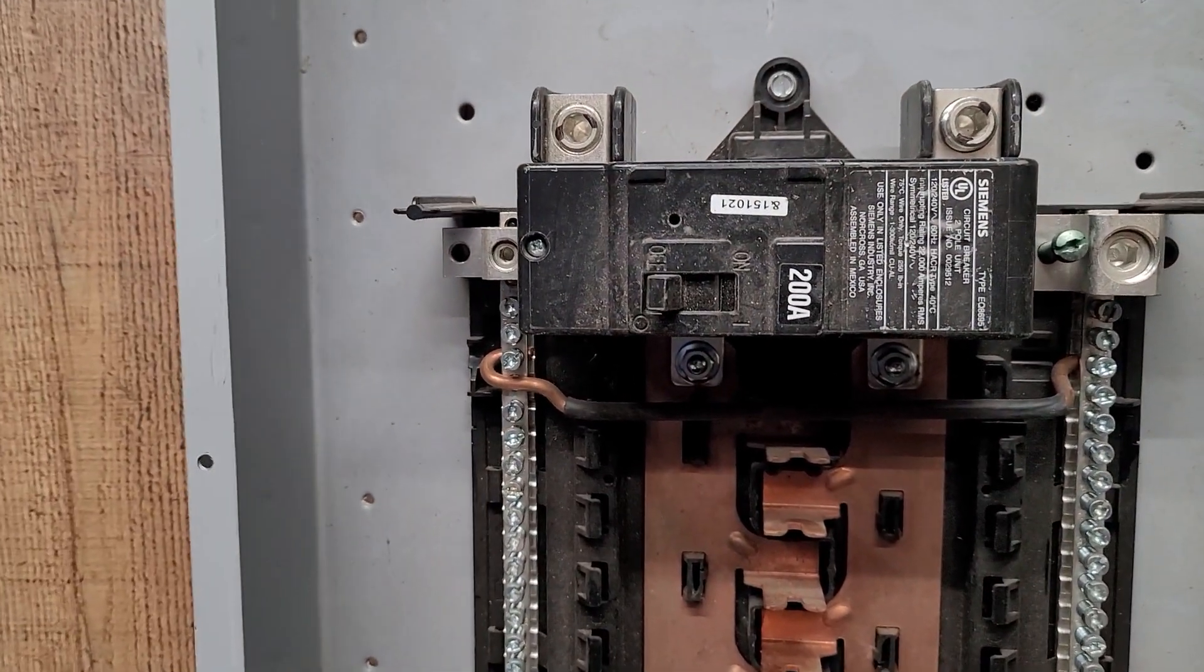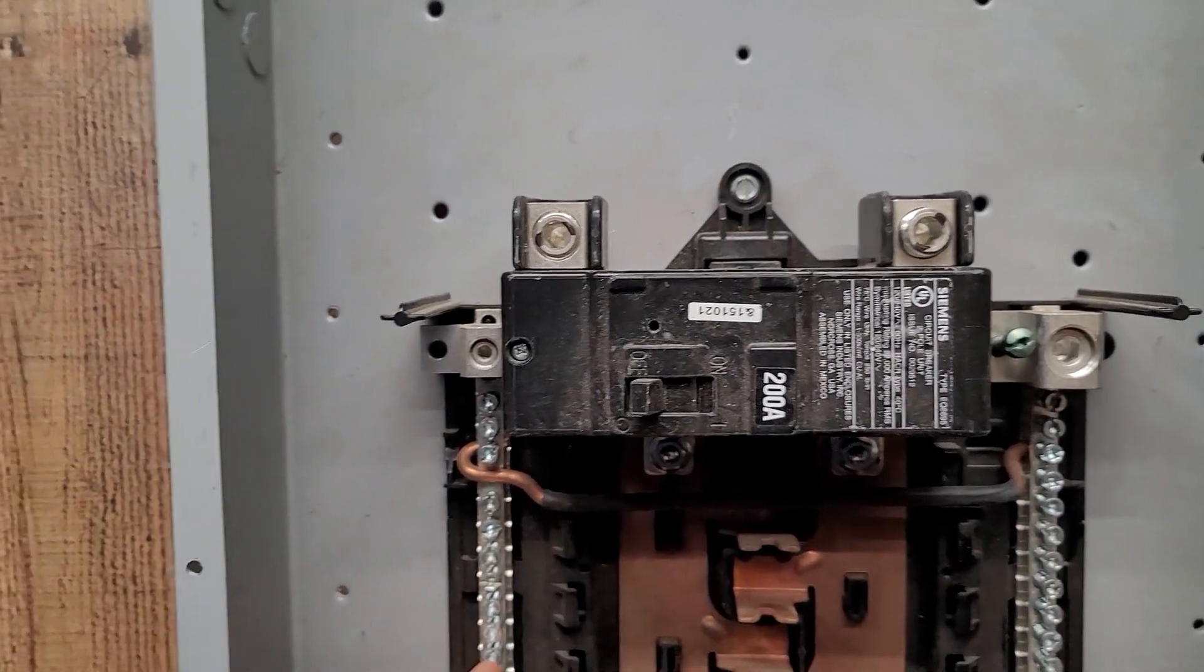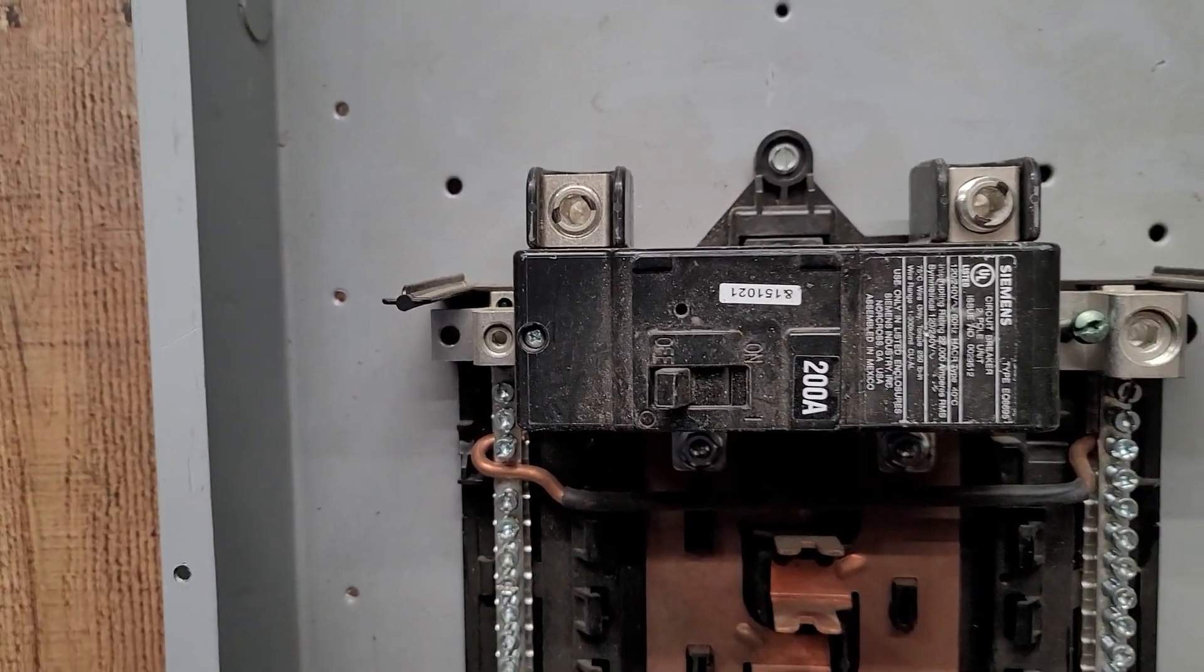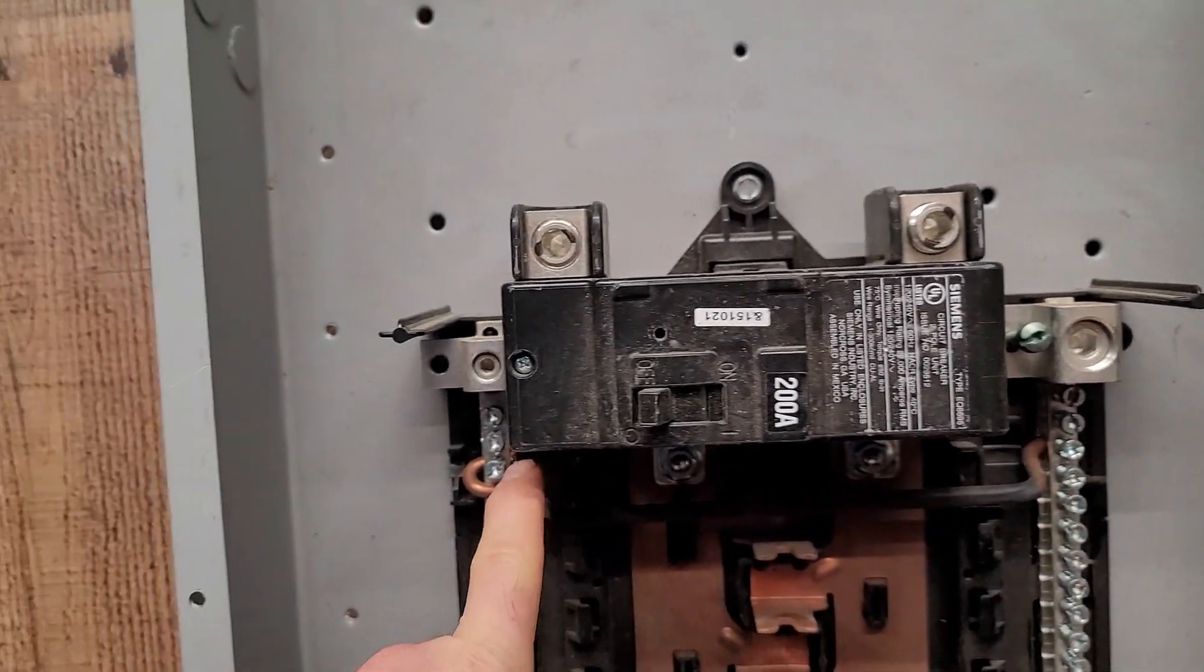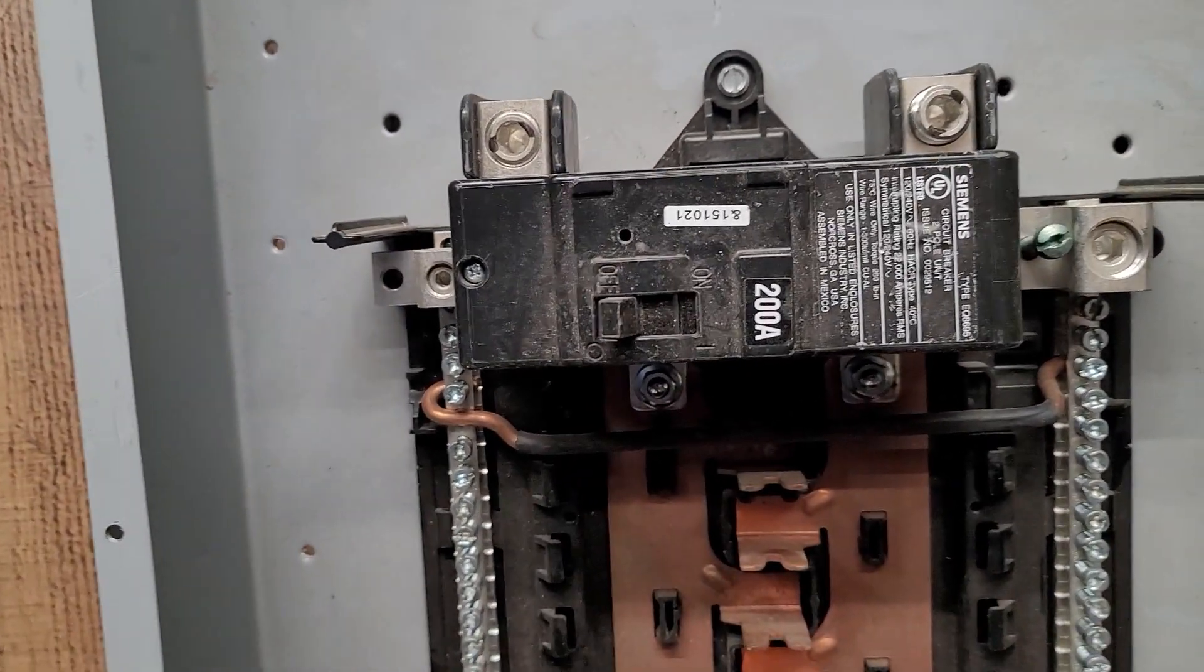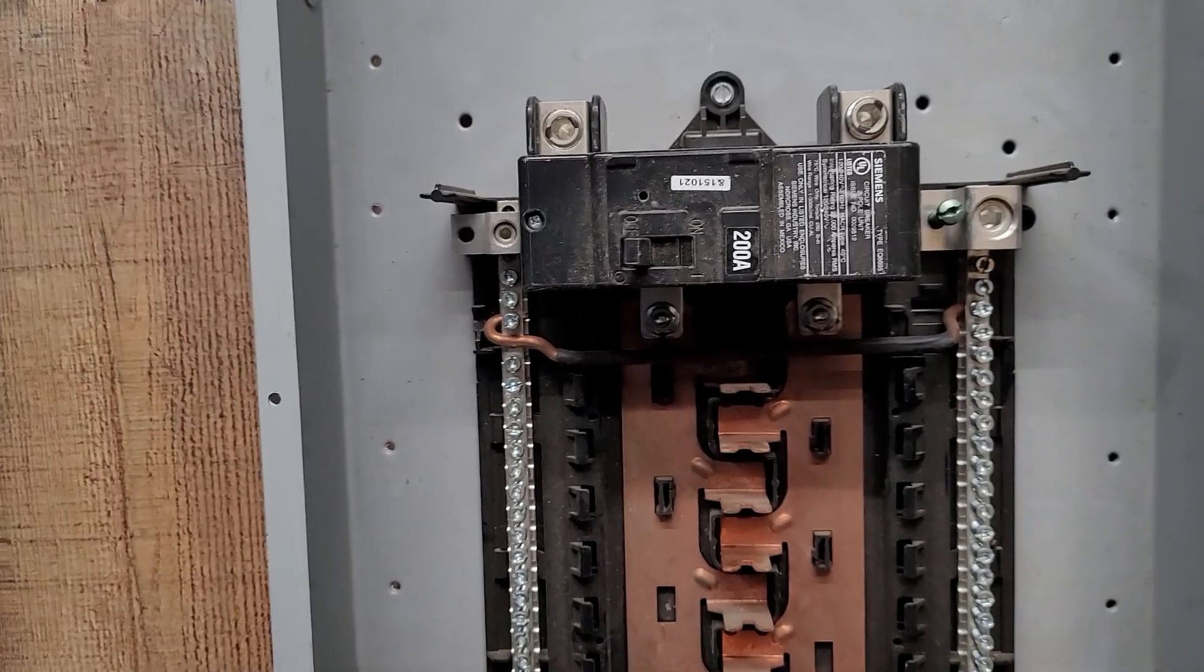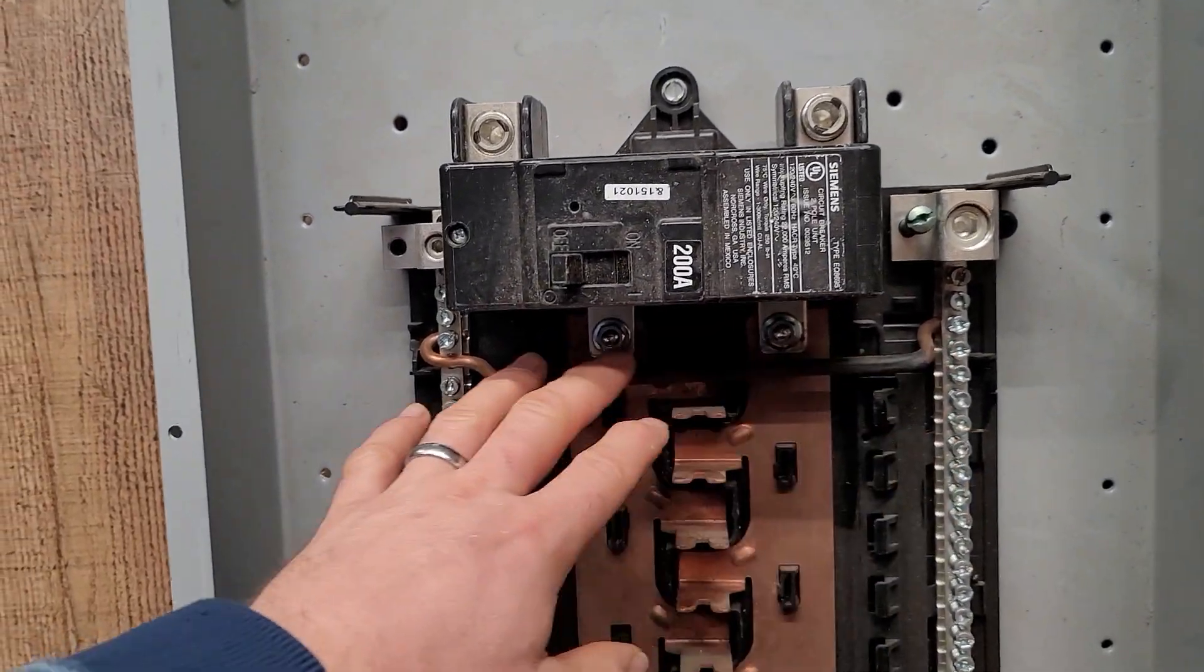So with that being said, if this is the second point of disconnect, one of the temptations is to just pull this bar out. Loosen it here, loosen it there, and pull that bar out. But this is where you got to be really careful. A lot of these panels are not listed to take that bar out.